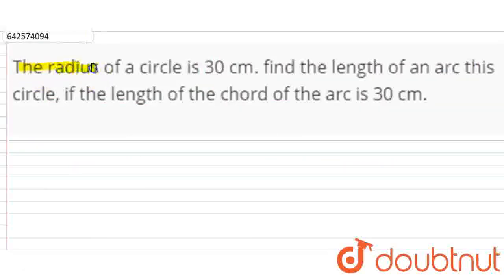Hello friends, the question is: the radius of a circle is 30 cm. Then we have to find the length of an arc of this circle, if the length of the chord of the arc is 30 cm.